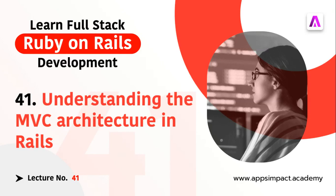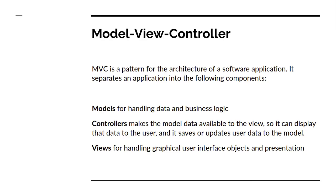Hey guys, welcome to the 41st lecture of our bootcamp series. In this video we will try to understand how MVC architecture works in Rails and what MVC architecture is in general. MVC stands for Model View Controller, and it is a pattern for the architecture of a software application that separates an application into three components.